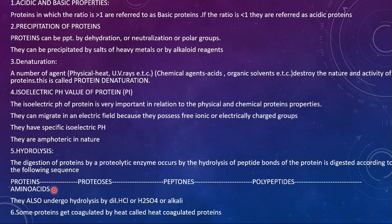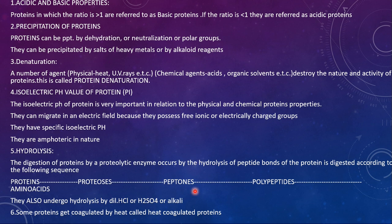As an analogy: if paragraphs are broken down they give sentences, sentences give words, words give alphabets, and if alphabets are broken down, nothing meaningful remains — that's how amino acids are the final units. Proteins can also undergo hydrolysis by dilute HCl or H2SO4 or alkali. Additionally, some proteins get coagulated by heat, called heat coagulated proteins. These are the key chemical properties important from an exam point of view.